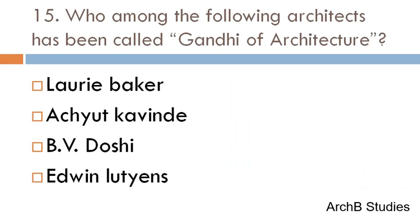Who among the following architects has been called the Gandhi of architecture — Laurie Baker, H. O. Kavinde, B. V. Rossi, or Edwin Lutyens? The correct answer is Laurie Baker.